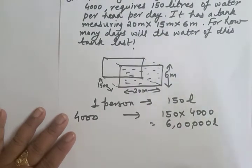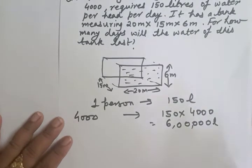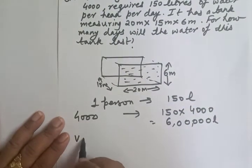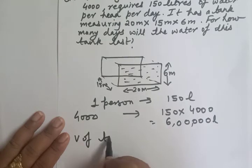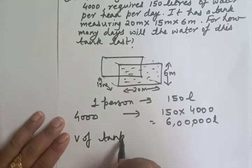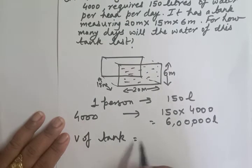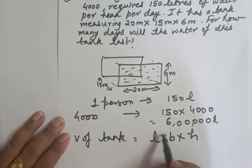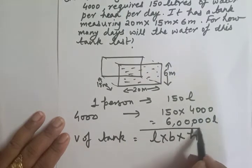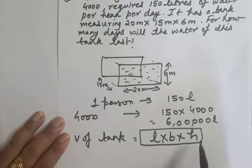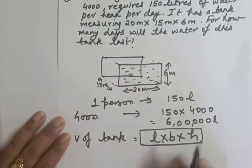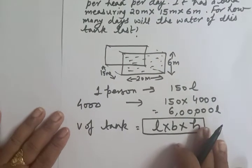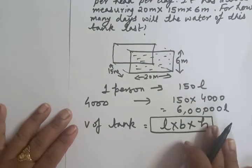Now we have to find out the capacity of the tank. The volume of the tank is equal to L × B × H — this is the formula for the volume of a cuboid, and the tank is of cuboid shape.